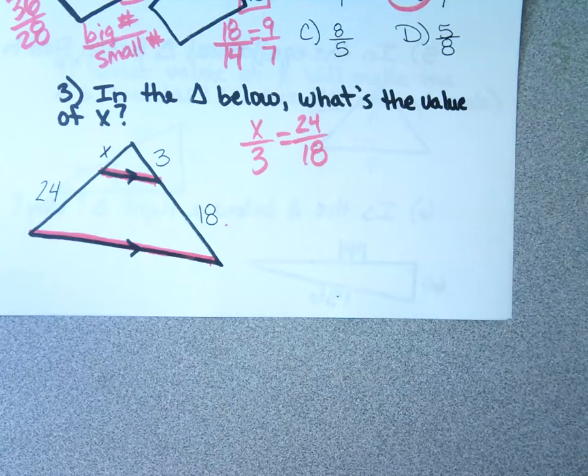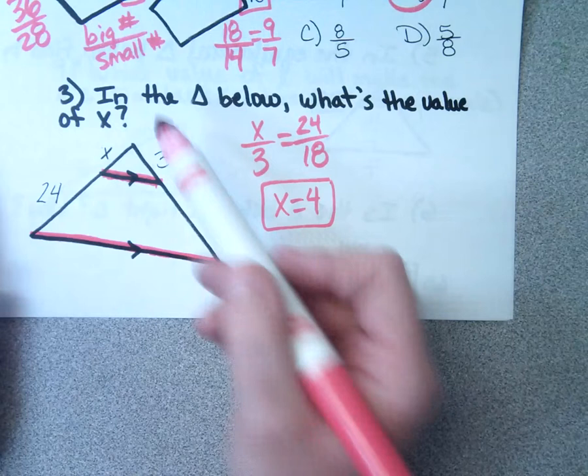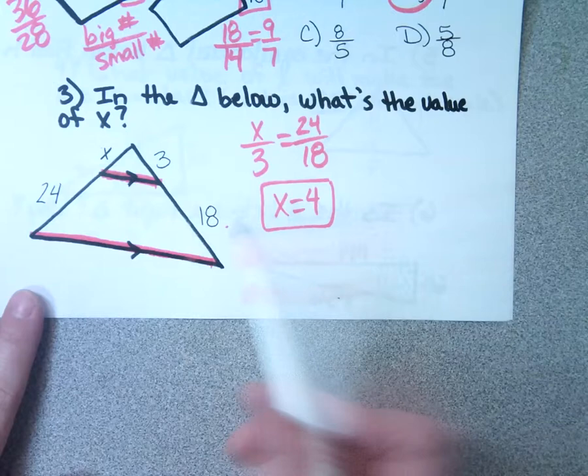This is not the only way to do this picture. I could have talked about little triangle versus big triangle and compared the little one to the big one. But because I knew these were parallel, I can just match up these sides together.